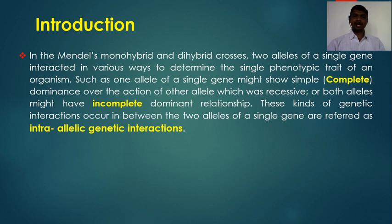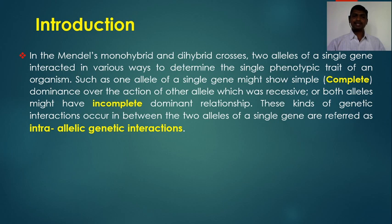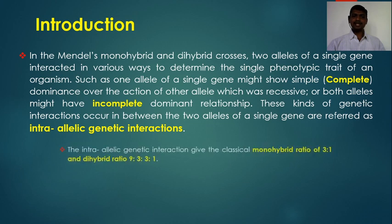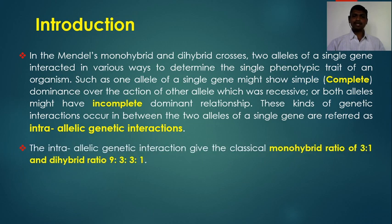These kinds of genetic interactions between the two alleles of a single gene, located on the same chromosome, are referred to as intra-allelic genetic interactions. They show complete or incomplete dominant relationships. As a result of intra-allelic genetic interaction, it gives the classical monohybrid ratio of 3:1 and the dihybrid ratio of 9:3:3:1.